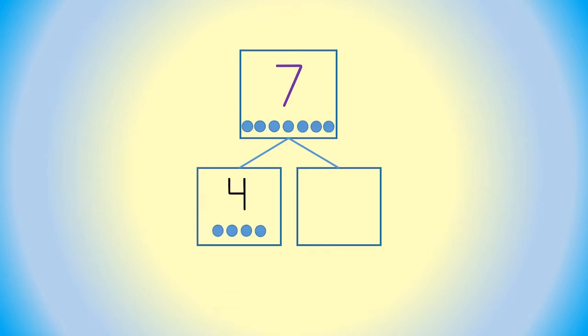One part is 4, and the other part is 3. With this number bond of 7, 4, and 3, you can create 4 sentences of addition and subtraction.